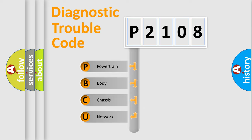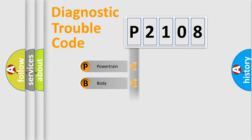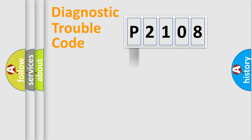We divide the electric system of the automobile into four basic units: Powertrain, Body, Chassis, and Network. This distribution is defined in the first character of the code.